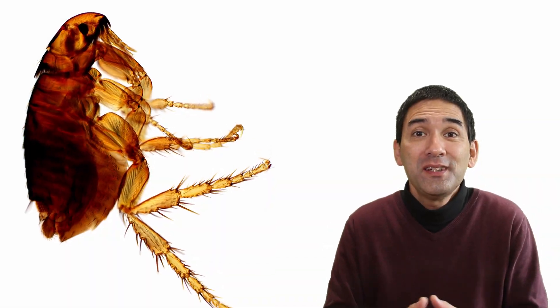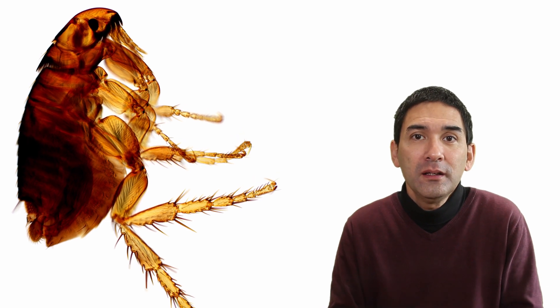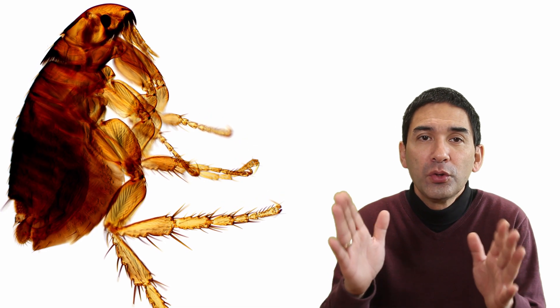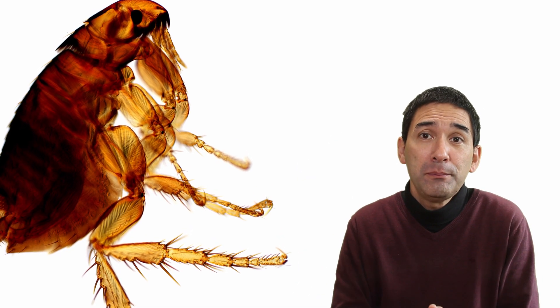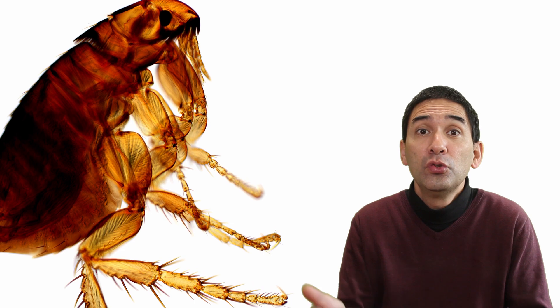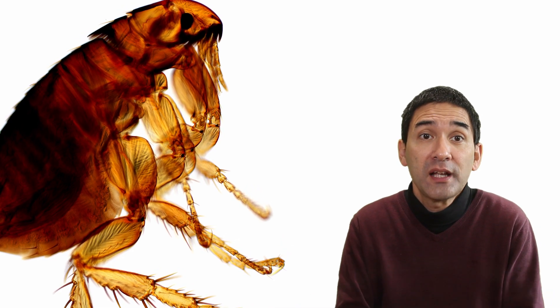The flea that you can see here is a so-called dog flea and it's able to jump about 20 to 30 centimeters, which is about a foot. This might not appear to be very much, but it is about 100 to 200 times its own body size.